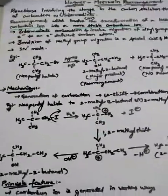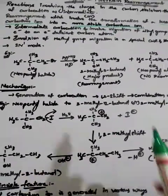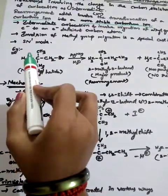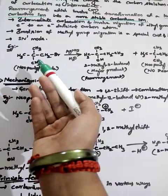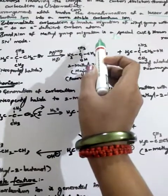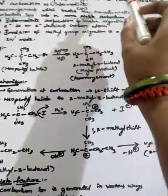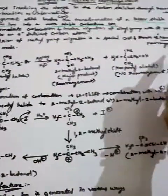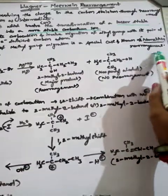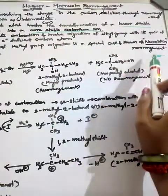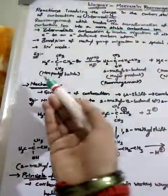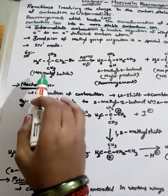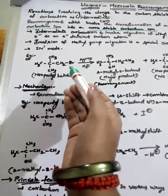A special case exists: if we take a methyl group as the migrating group, the involvement of methyl group migration is a special case of Wagner-Meerwein rearrangement known as Nametkin rearrangement. As an example, I am taking neopentyl halide — you can take any halide like bromide, iodide, or fluoride.